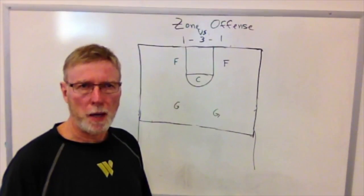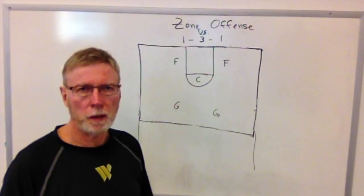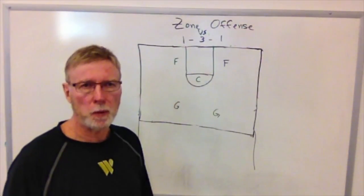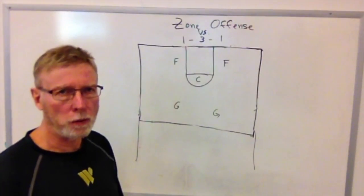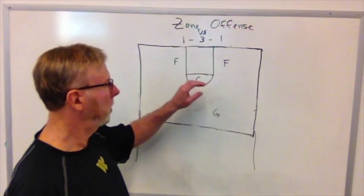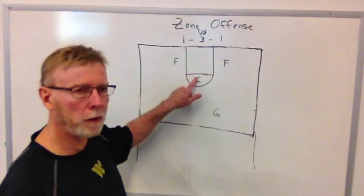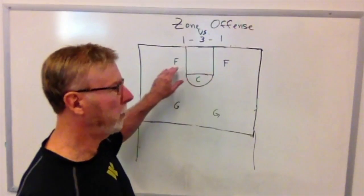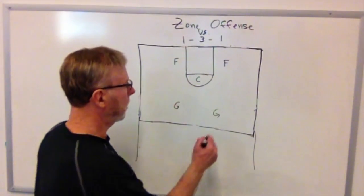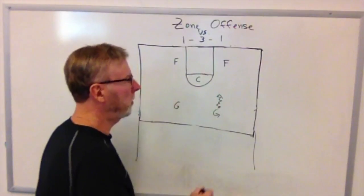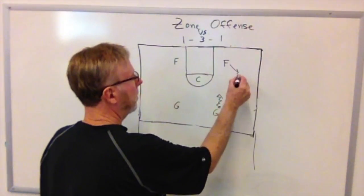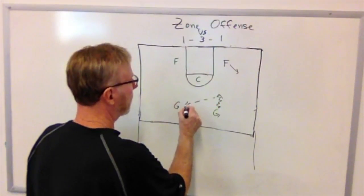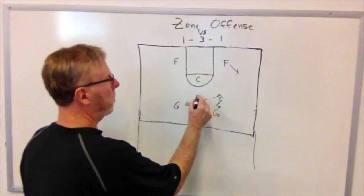For teams that want to come at us with a 1-3-1 defense, we want to counter that through a special offense lined up 2-1-2. We have our two guards out front, our center at the free throw line, and our two forwards around the block. The guard wants to penetrate, look at making a pass, hitting the center, or reversing the ball back to the other guard against a 1-3-1.